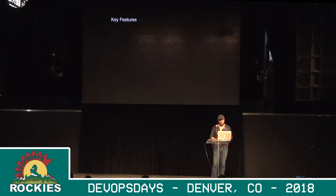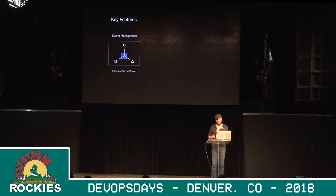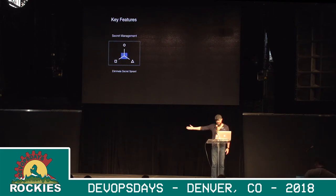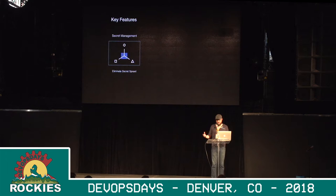Some of the key features of Vault — secrets management. I can't tell you how many times I've tried to get onto an instance and I'm looking for the key. So where is this key? It's actually sitting in Dave's home directory. Why is that key in Dave's home directory and why can't I get to it? So Vault provides that sort of consolidation, and anyone who is authenticated to Vault can actually get those secrets based on the policies associated with that.